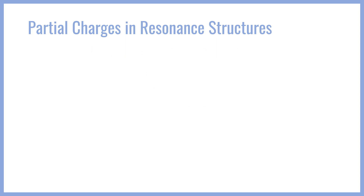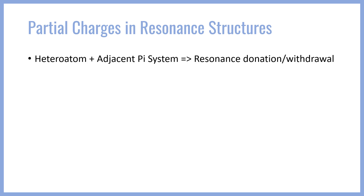One of the most important things we need to understand is how resonance structures with partial charges can arise. When we have a heteroatom that's adjacent to a pi system — that is, a double bonded system — the lone pair or a double bond from the heteroatom can interact with that pi system, giving either a resonance donation in the case of a lone pair, or a resonance withdrawal in the case of a double bond to a heteroatom.